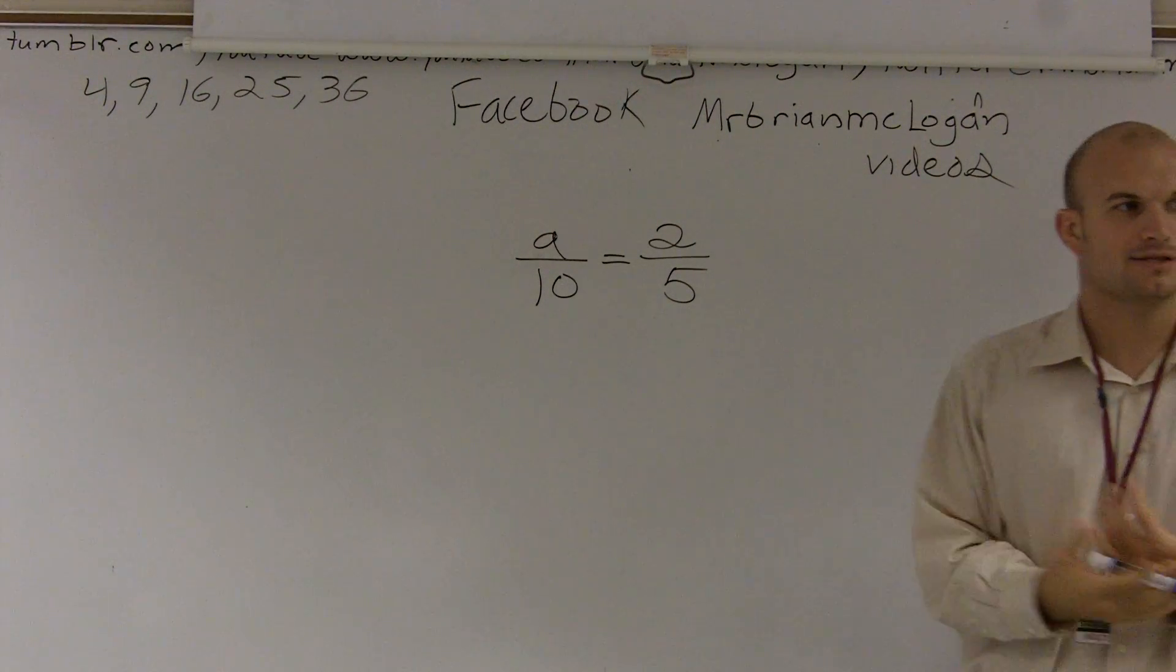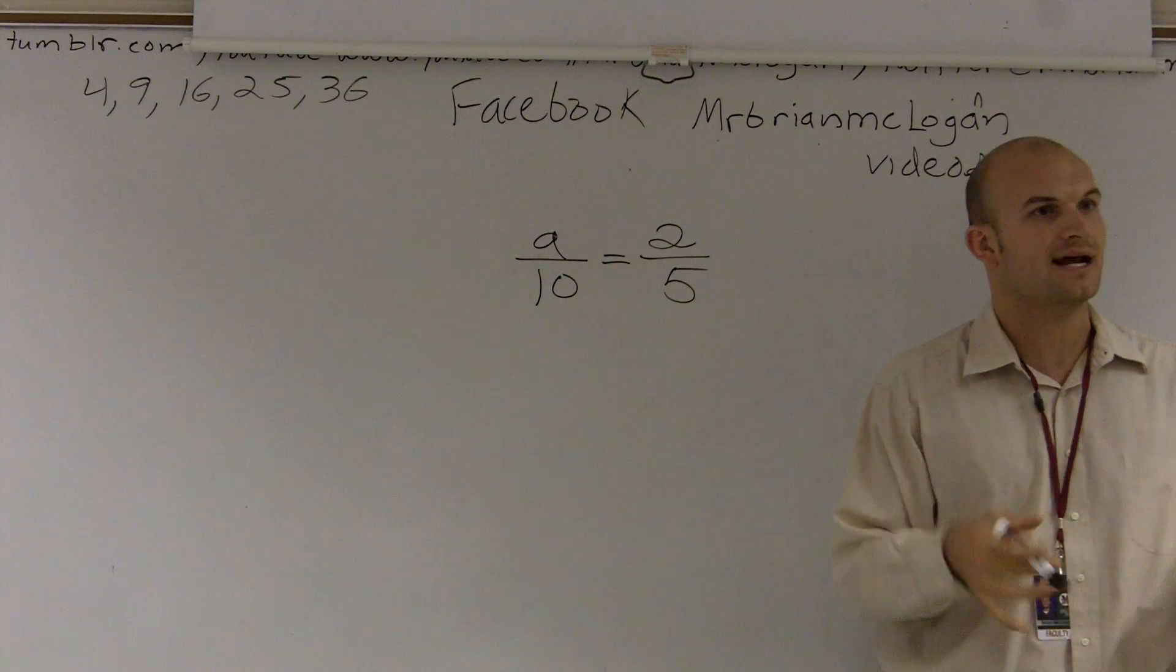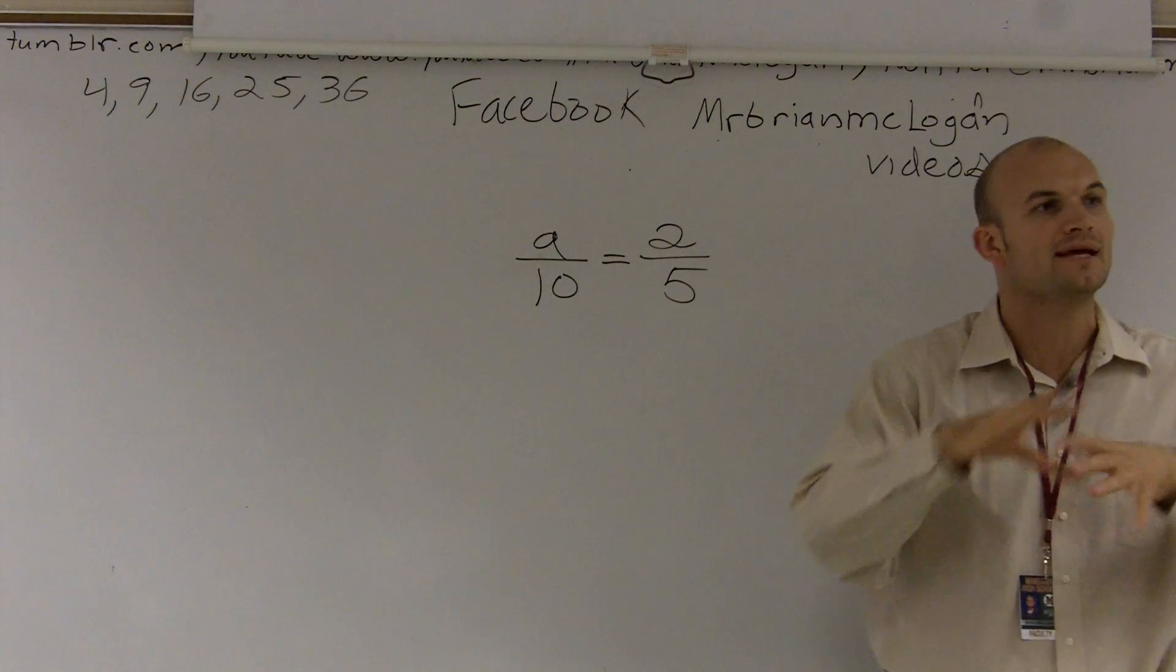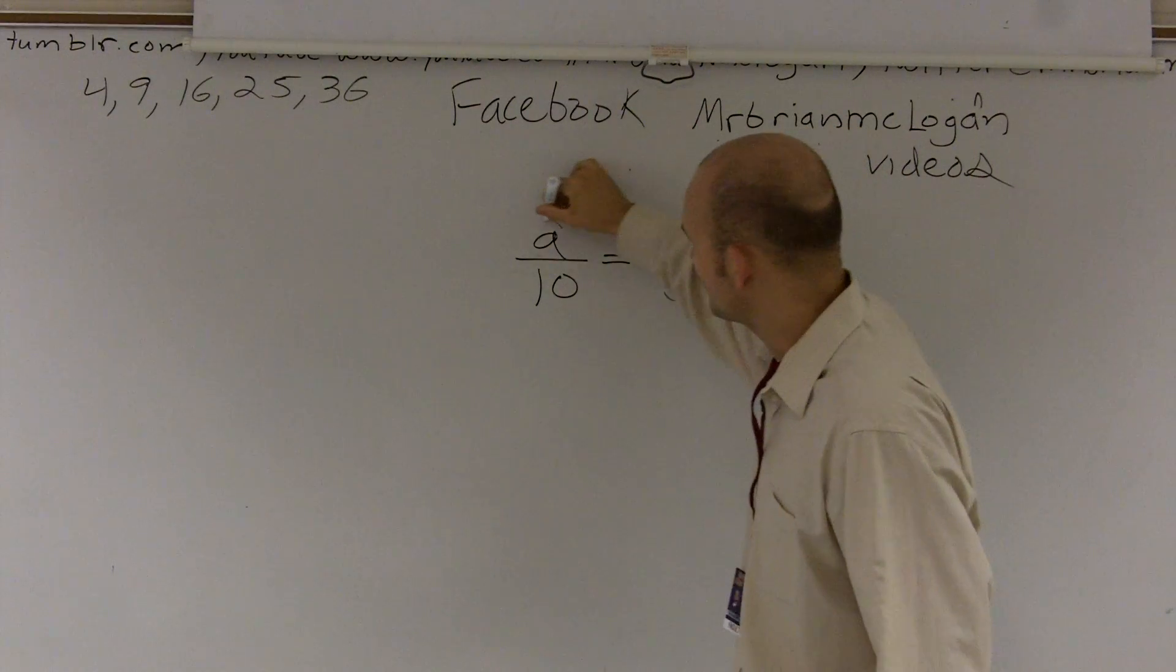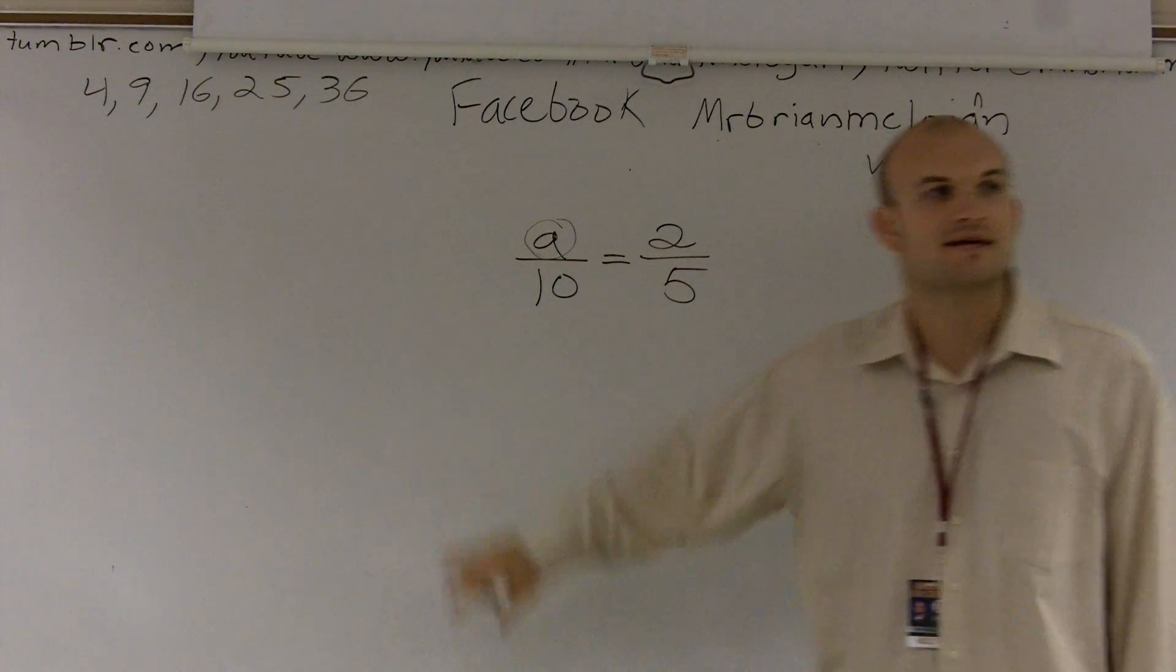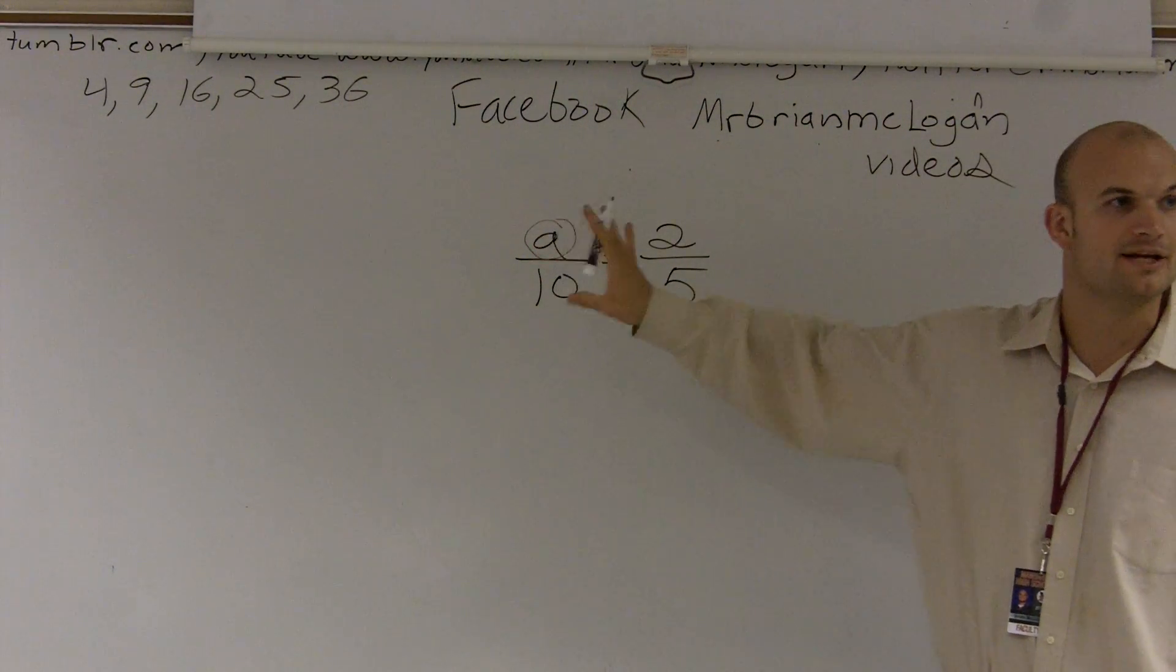So a couple of tips that I like to look at is when I'm trying to solve for A, I like to pin it against the wall. That's telling me don't do anything moving it at all. I want to solve for that variable. So I'm going to circle A. What that's telling me is that's the variable I want to solve for. I'm not going to do anything to it.